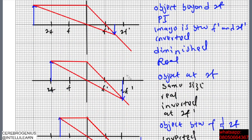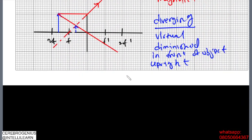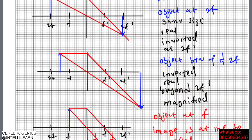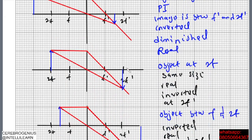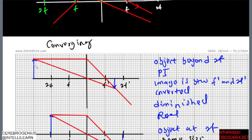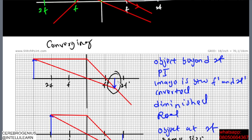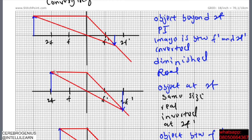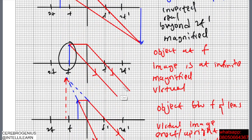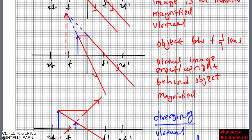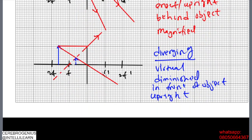This covers everything about formation of images by lenses. Apart from drawing the diagrams, this knowledge is important for optical instruments. Notice the pattern: object beyond 2f gives image between f prime and 2f prime; object at 2f gives image at 2f prime; object between f and 2f gives image beyond 2f prime; object at f gives image at infinity; object within f gives a virtual image.